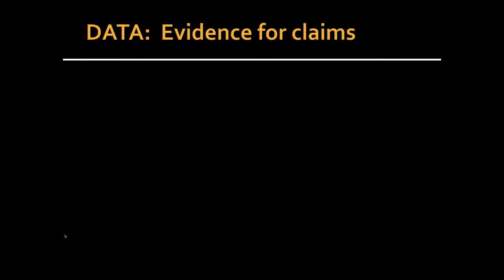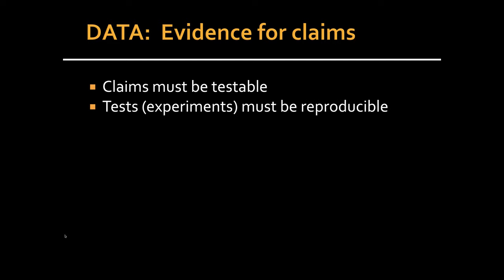Now, the data that you collect is the most crucial part of the scientific method. First of all, any claims that are made must be testable and the tests must be reproducible, which means you publish the results of your test and your test methodology. This way, other people can try what you did and see if they get the same results.